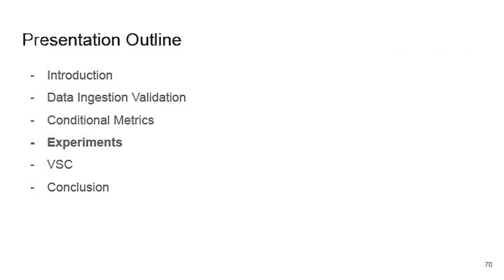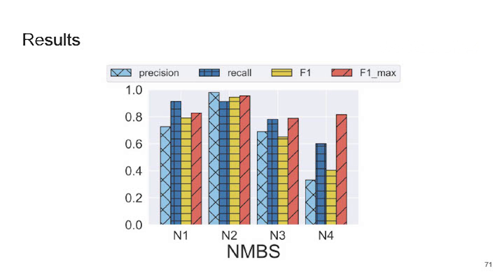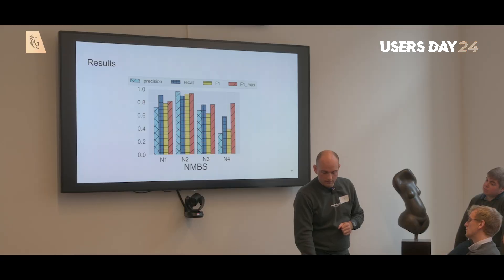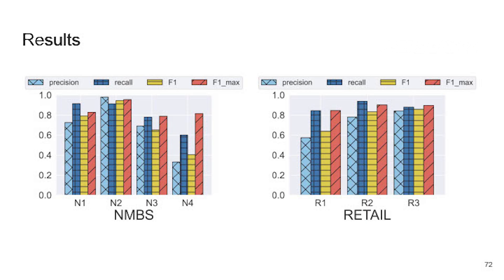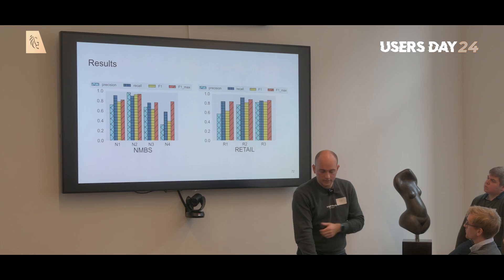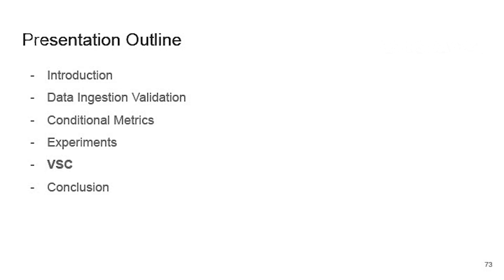We experimented by manually generating realistic scenarios on the railway dataset from the NMBS. For example, the N1 scenario is the broken clock, N2 is the broken GPS data, and so on. Results are actually very good, except in the last scenario — we found out why the results appear worse than they actually are, but won't go into detail due to time. We also ran experiments on a retail dataset based on webshop data, with modified tuples, and the results are pretty decent as well.